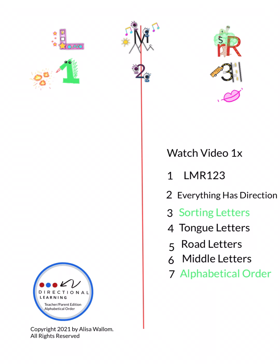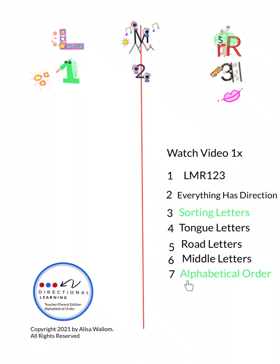Before you start this lesson of putting letters in alphabetical order or teaching the student the sequence, make sure you practice with them the sorting letters. Get your directional columns out, call the sound, and have the student put the wooden letters in the directional columns for sorting letters — make sure they repeat the sound too. Then you're ready to start teaching them how to put the letters in alphabetical order.